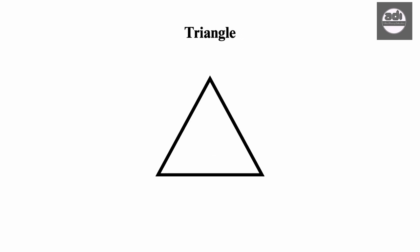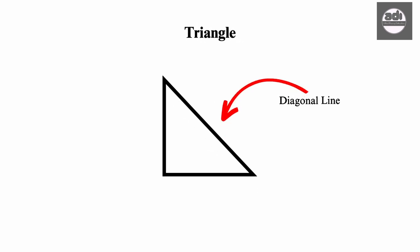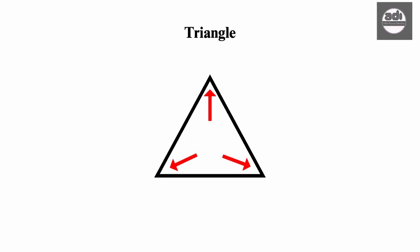A triangle is a three-sided geometric shape made up of at least one diagonal line. It has three corners. Depending on the type of triangle, the number of diagonal lines increases.